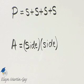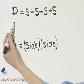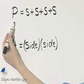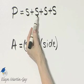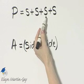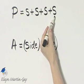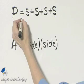Let's find the perimeter and the area of the square. Remember, perimeter means the distance around. So to find the perimeter — I'm using P to stand for perimeter — we'll find the length of a side plus side plus side plus side. That will be the length around the square.